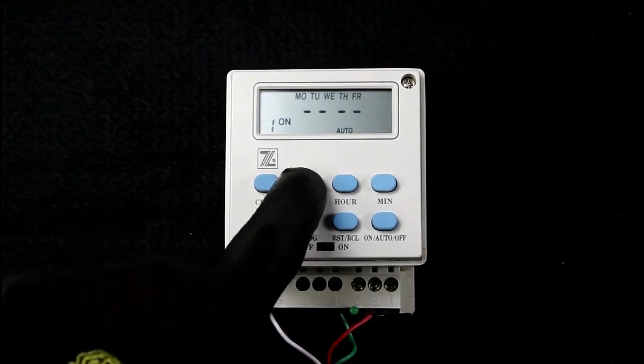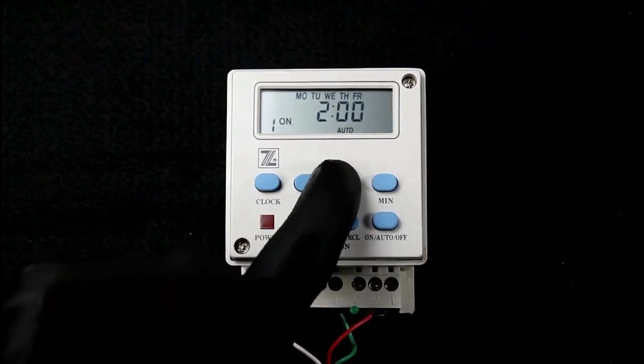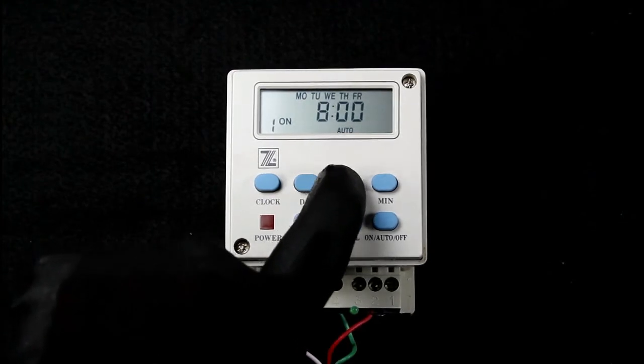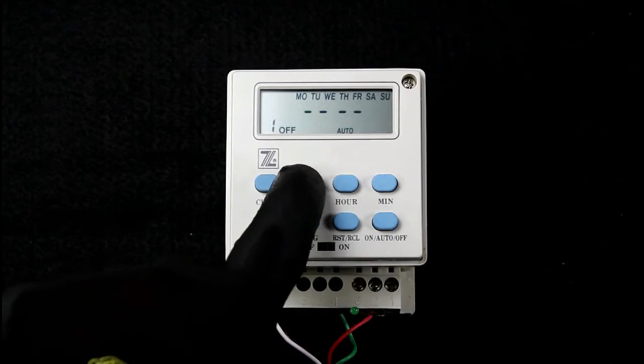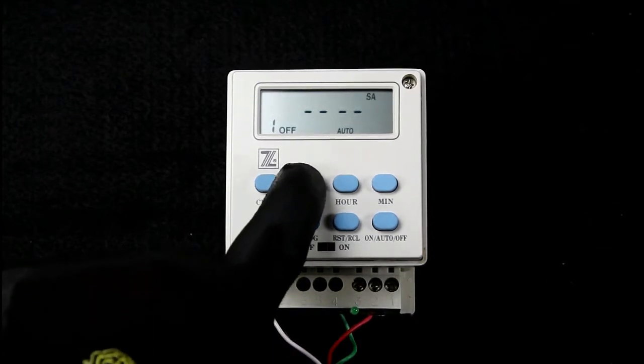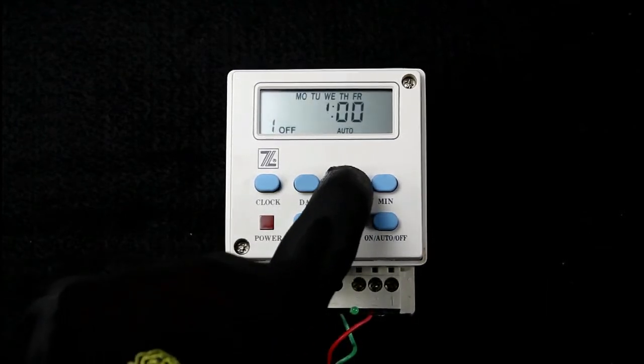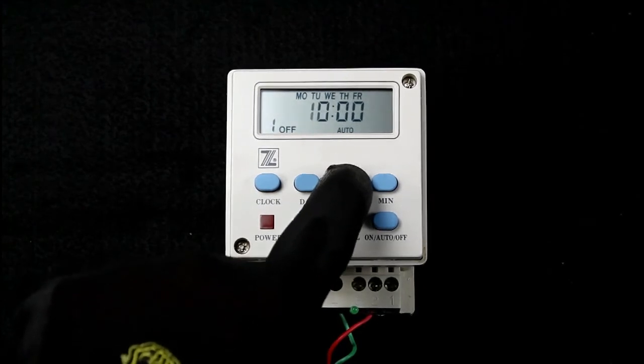Now we'll change the weekdays first, Monday through Friday. Next, the time to turn on the timer, 8 a.m. Next, the time to turn off the relay, Monday through Friday. We'll change this to 1700 hours, or 5 p.m., and press program.